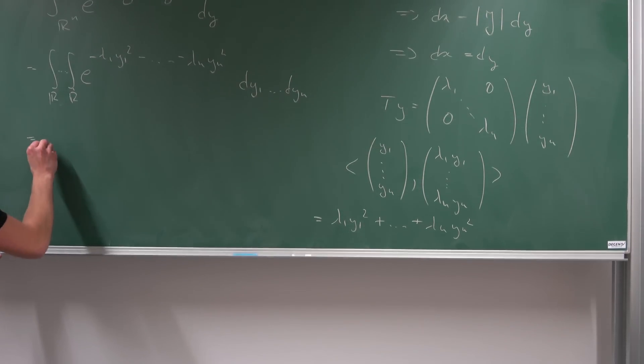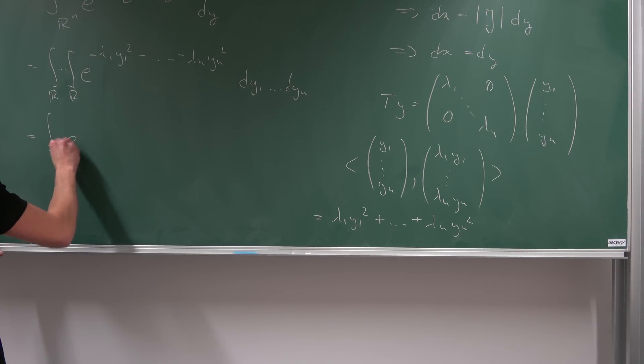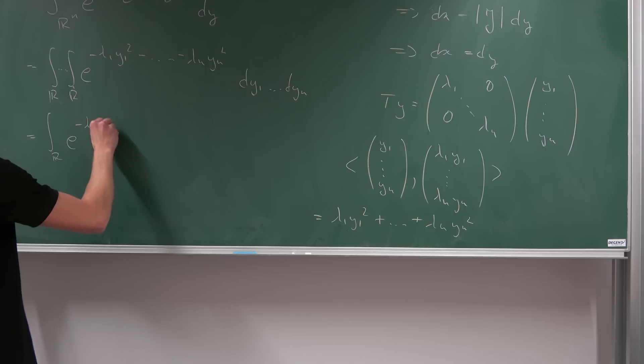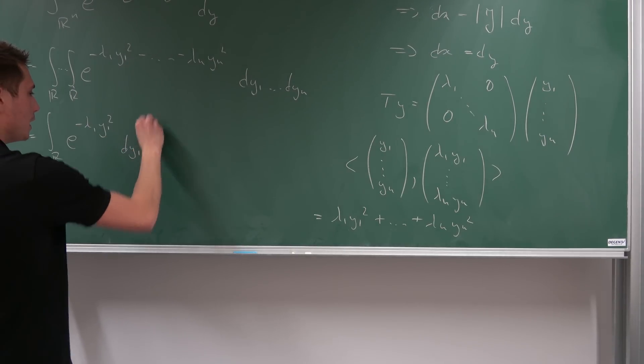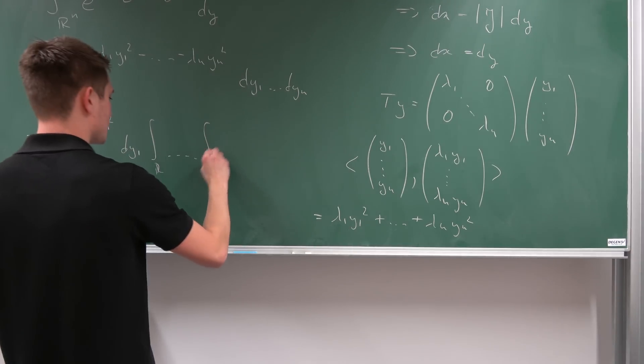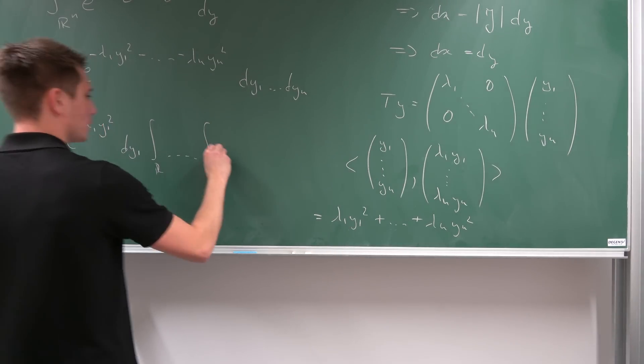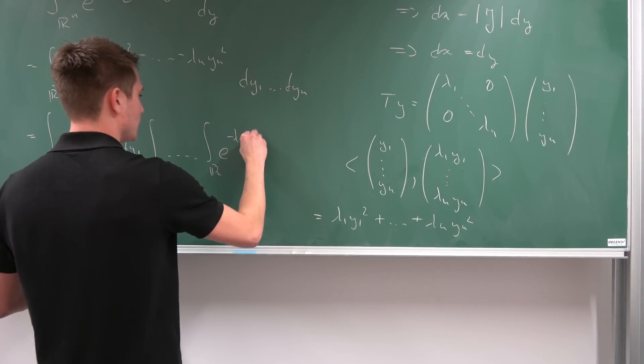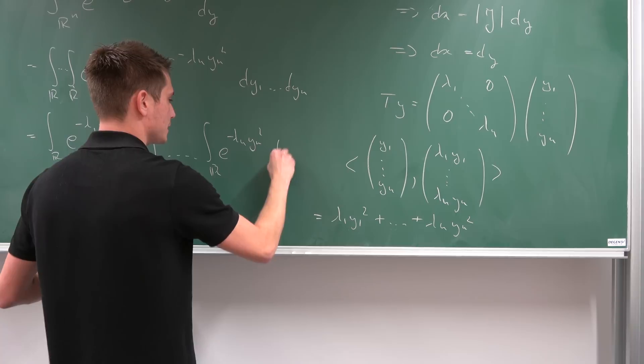Meaning, in other words, we take the integral over r, e to the negative, lambda 1, y1 squared, dy1, and multiply together with the next one, until we get integral over r, e to the negative, lambda n, yn squared, dy1.